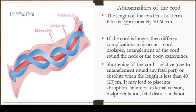Looking at the abnormalities of the umbilical cord, the length of the cord in a full-term fetus is approximately 40 to 60 centimeters. If the cord is longer, different problems may be associated with this: the cord can easily prolapse, which will be an obstetric emergency, as we want to prevent the presenting part from compressing the cord, which will endanger the life of the fetus. The cord can also entangle itself and, sometimes because it's so long, go around the baby — even strangling the baby around the neck and at the extremities of the fetus.